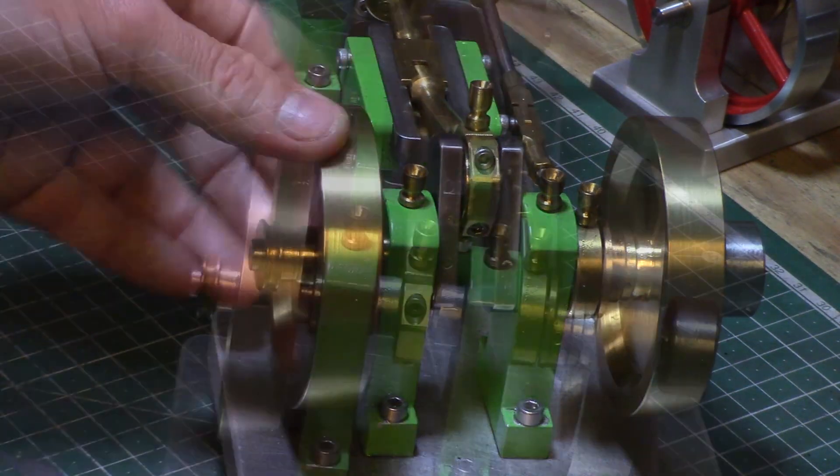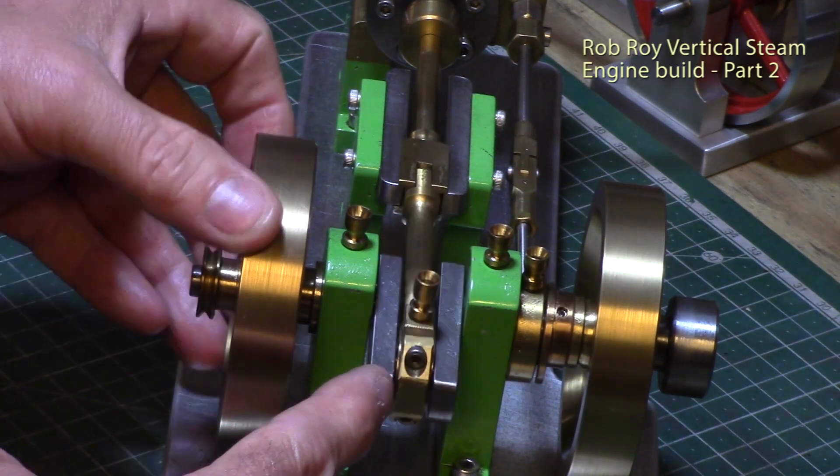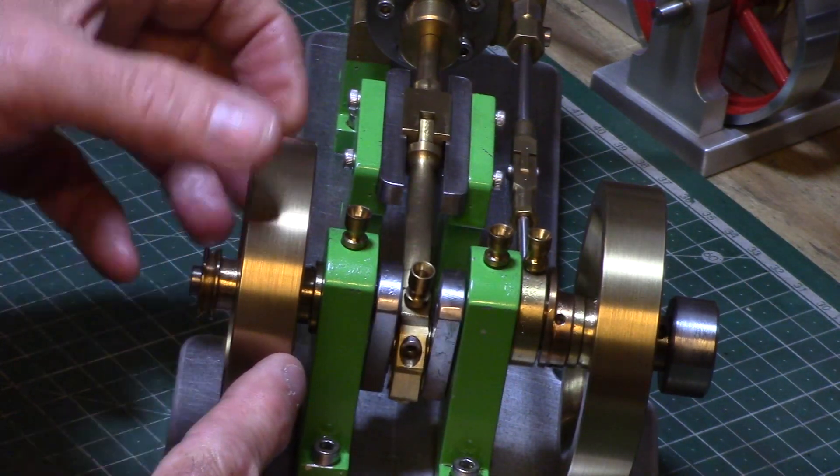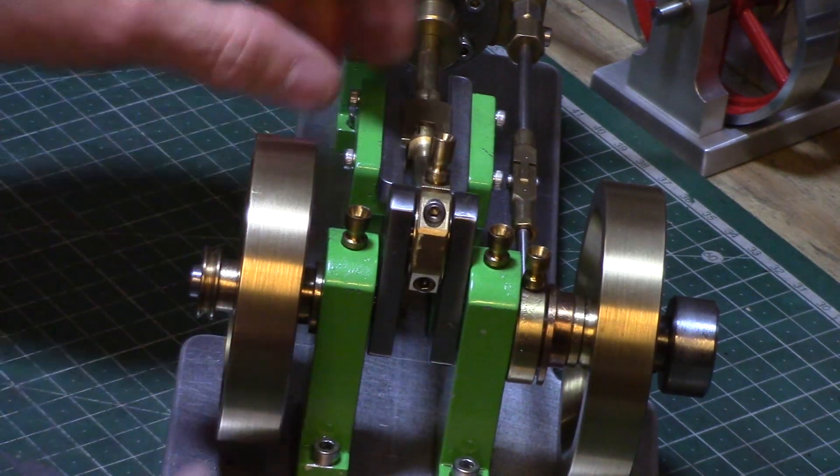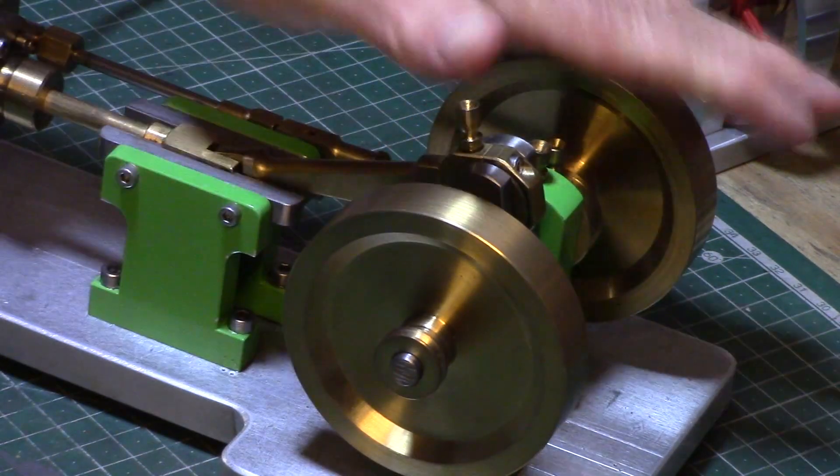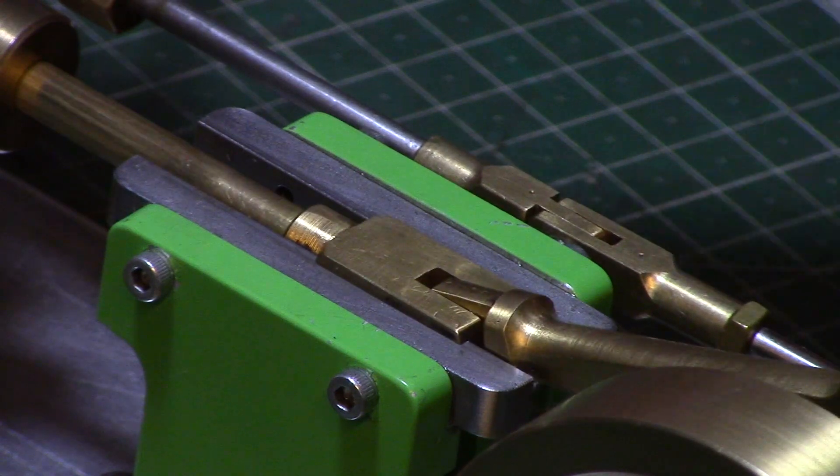The connecting rod was made from brass in a similar fashion as I demonstrated in my Rob Roy vertical engine build videos with a phosphor bronze split bearing which is fitted around the crank journal. This then connects with the clevis joint to brass crosshead which is held along the cylinder axis with the crosshead slide guides.